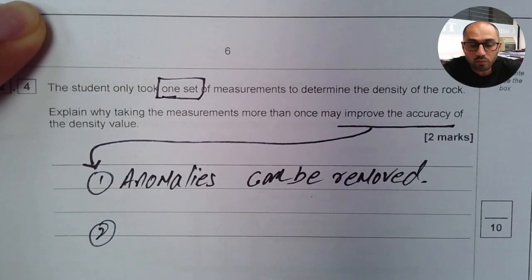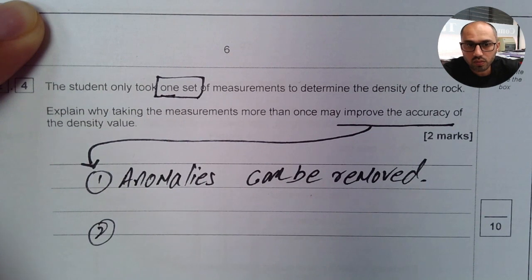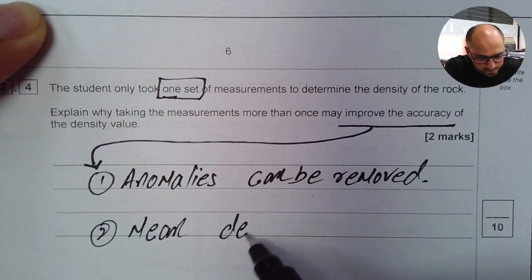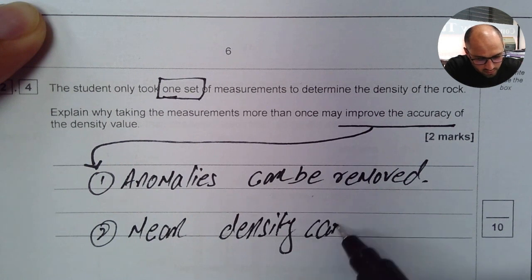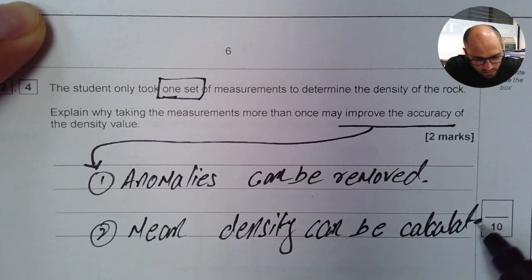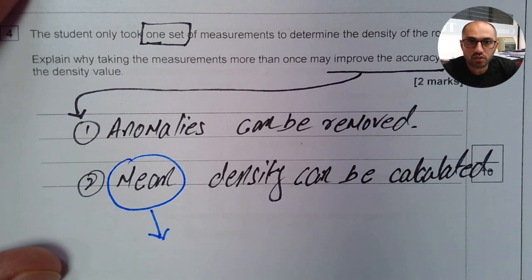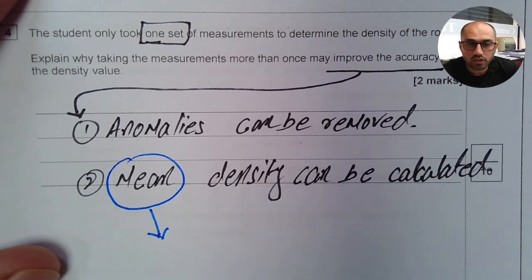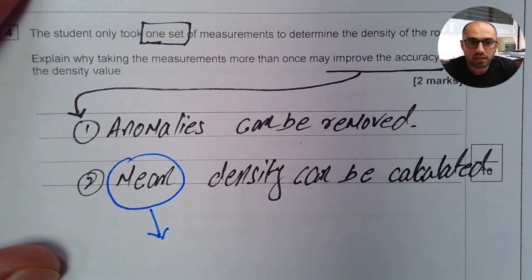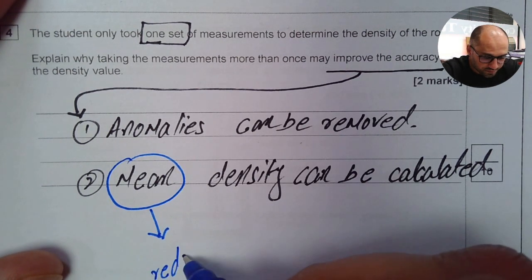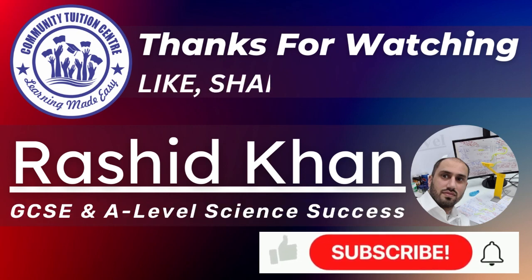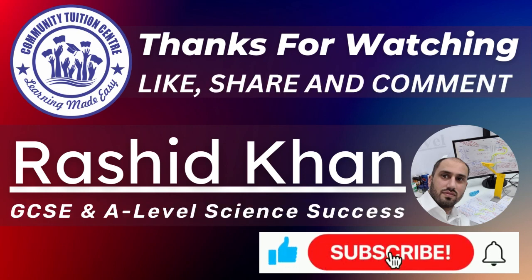And in addition to this, if you have more than one value, then what you can do is you can always calculate the mean value of the density. So we can say mean density can be calculated. Now when it comes to mean, I would like to remind you that there are two types of errors. One is called systematic error and the second one is called random error. By taking mean, you reduce the random error. You can't reduce systematic error by taking mean of the values. We can say this reduces random error.